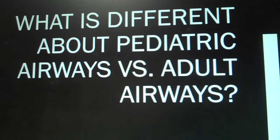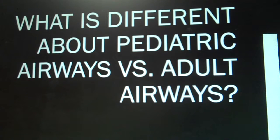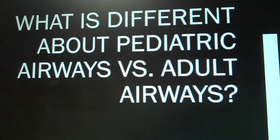The only time newborns breathe through their mouth is when they're crying. They are nose breathers up until two to three months of age. Alveoli are present in the full-term newborn — about 25 million of them — but they're underdeveloped, and they increase in size and complexity up until eight years of age. Children less than six use their diaphragm to breathe, and they have fewer glycogen reserves, so there is more rapid muscle fatigue when they are struggling to breathe and using accessory muscles.